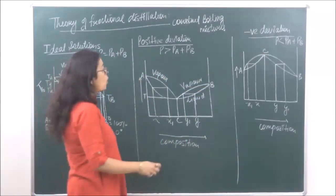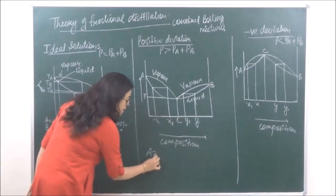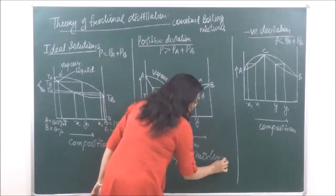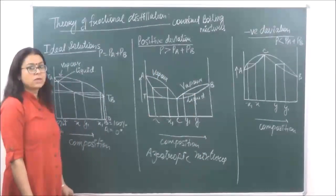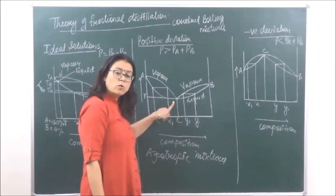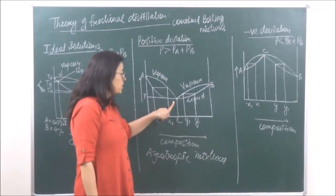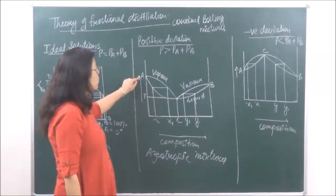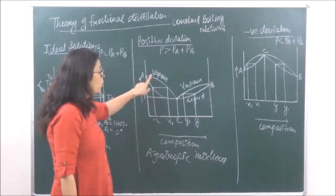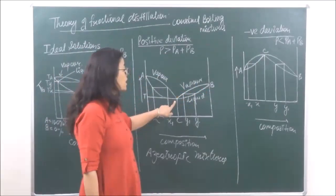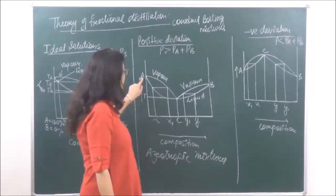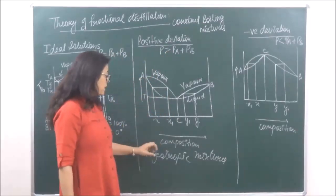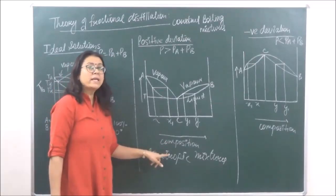Constant boiling mixtures — another name which can be given is azeotropic mixtures. Now in this graph, a minima is observed. If a minima is observed, this means that this is minimum boiling azeotropes. The boiling point of pure component A is at one point and the boiling point of pure component B is at another point, but the boiling point of the mixture is lesser than both A and B. So positive deviations result in minimum boiling azeotropes.